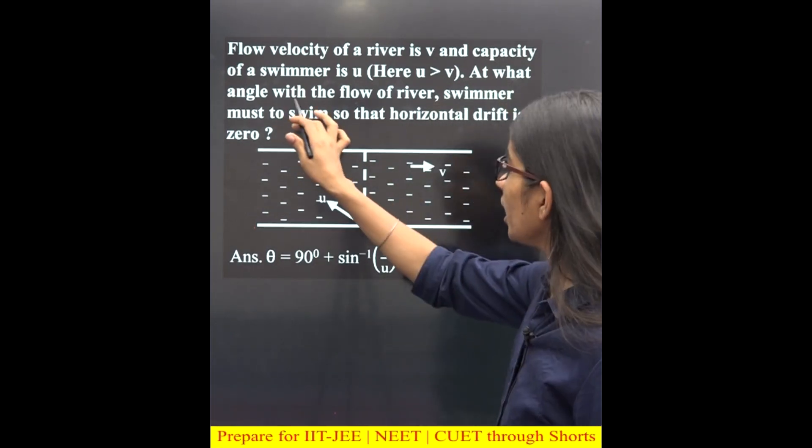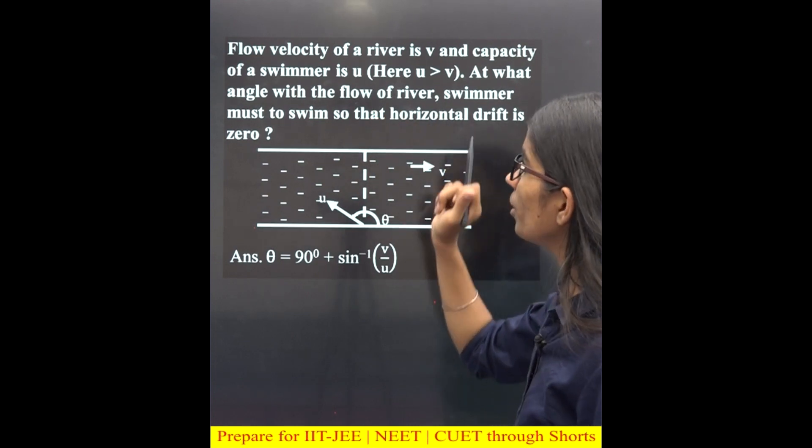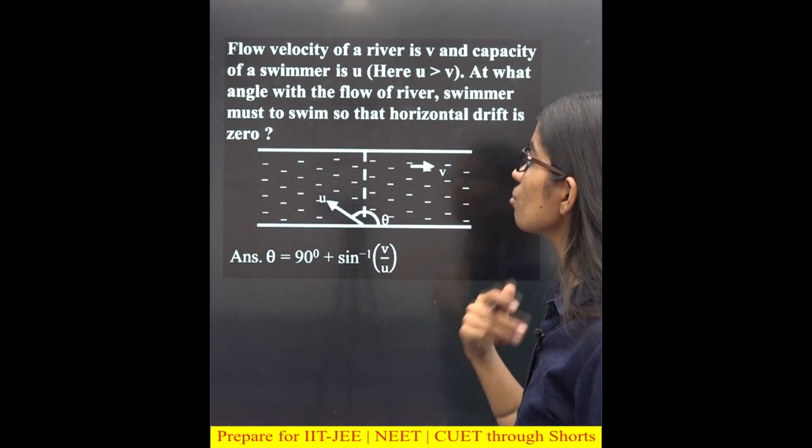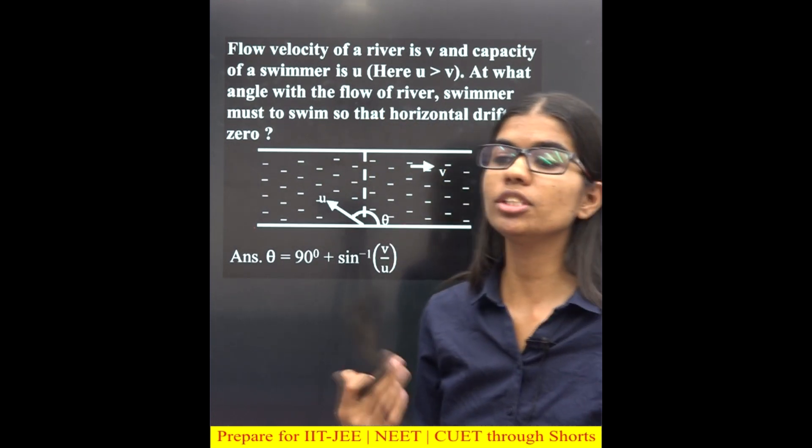At what angle with the flow of the river must the swimmer swim so that the horizontal drift is zero?